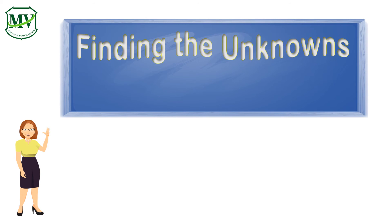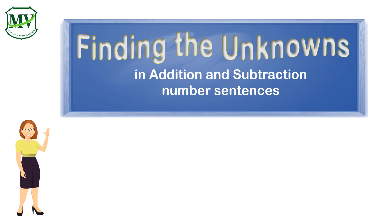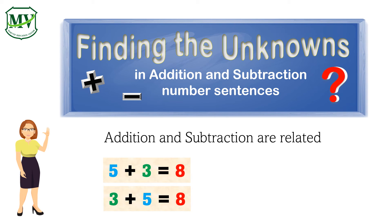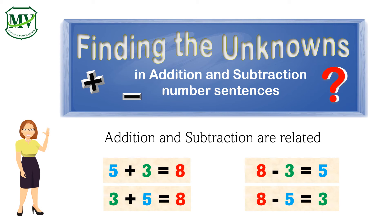The last part of this video is about finding the unknowns in addition and subtraction number sentences. Addition and subtraction are related. For example, 5 plus 3 equals 8, and 3 plus 5 equals 8. Or, 8 minus 3 equals 5, and 8 minus 5 equals 3.